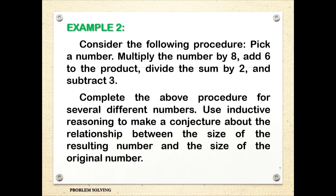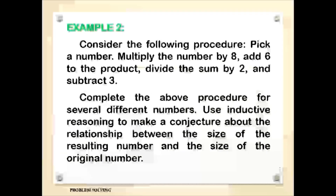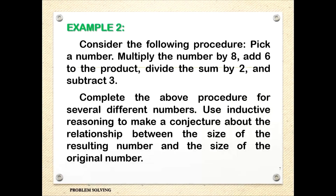Example 2: Consider the following procedure. Pick a number, multiply the number by 8, add 6 to the product, divide the sum by 2, and subtract 3. Complete this procedure for several different numbers. Use inductive reasoning to make a conjecture about the relationship between the resulting number and the original number. I will pick 3 numbers and compare the results.